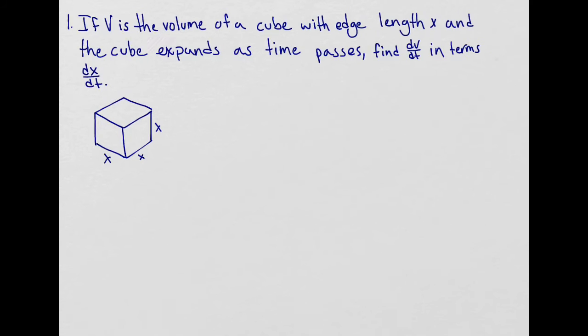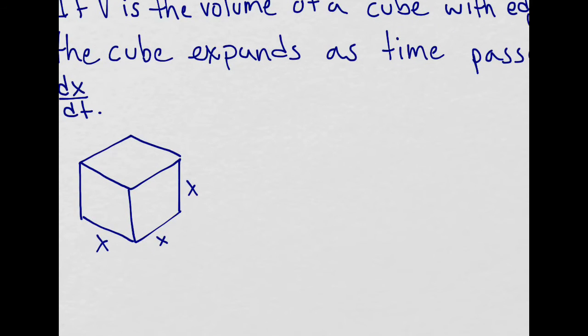So the way we solve this problem is by finding a formula that relates both rates. In this case, it's going to be the volume formula. So the volume for a cube is x cubed. And all we have to do is find the derivative of both sides with respect to time. So we get 3 times x squared dx/dt.